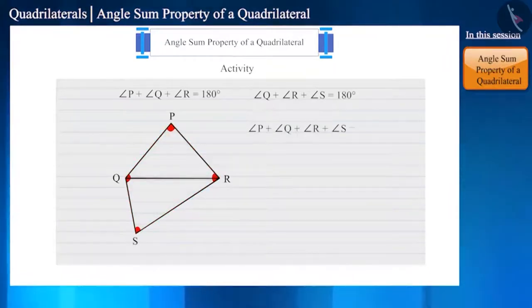So, the sum of all the angles of this shape so formed will be 360 degrees and this shape is a quadrilateral.